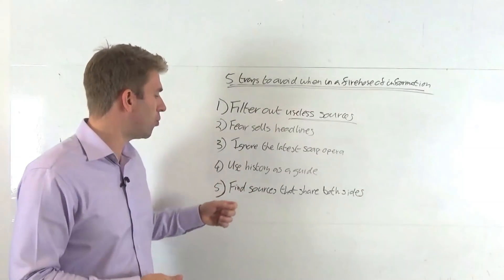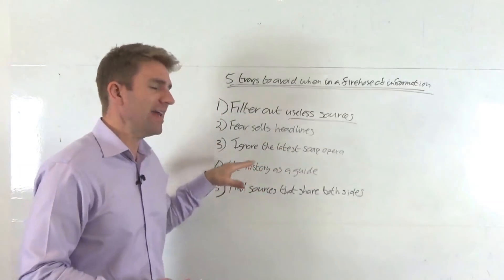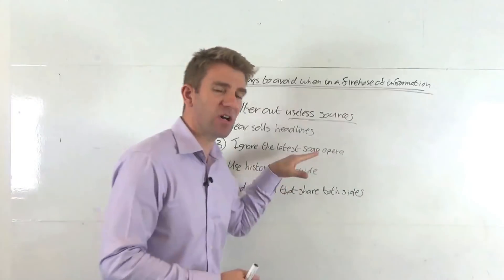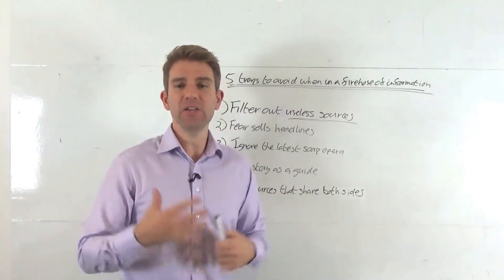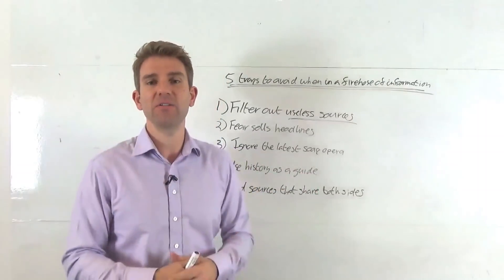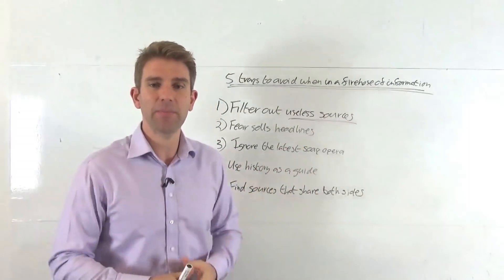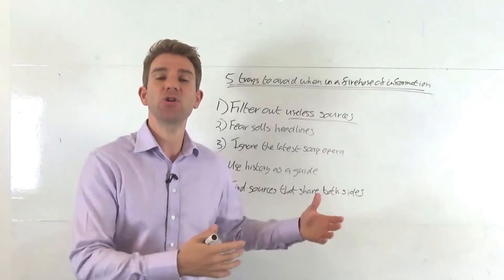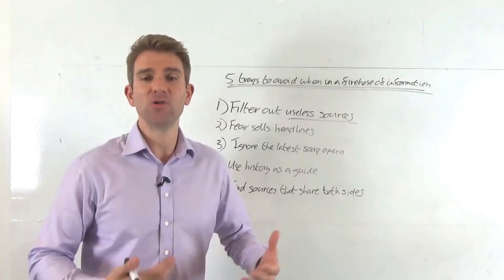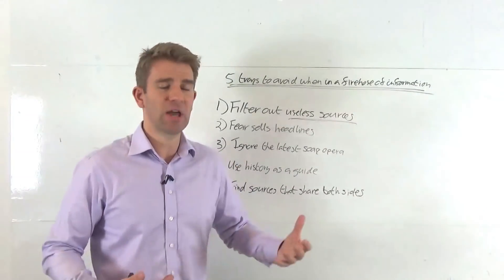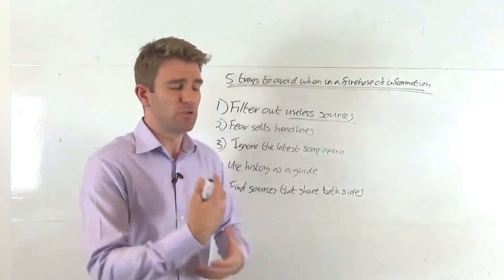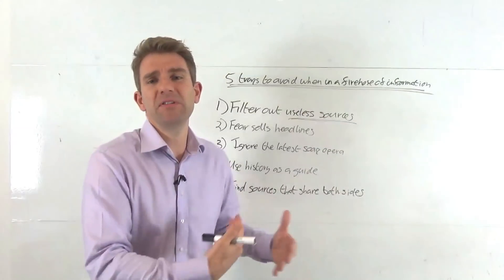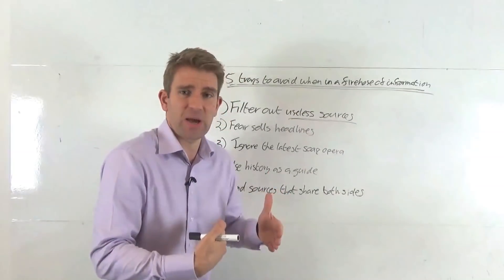Okay, number four. The trap you could fall into here is looking at hysteria and not history. So use history as a guide. In other words, when you see these hysterical headlines that are saying this is going to happen, that's going to happen, just stop, think. Don't fall into the trap of immediately reacting to that. Look at history and say, hey, what happened when we had the first interest rate hike after having nothing? What happened when we had the first change in governance here, whatever it may be?